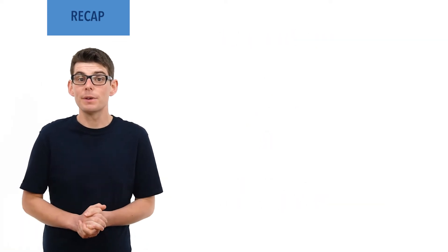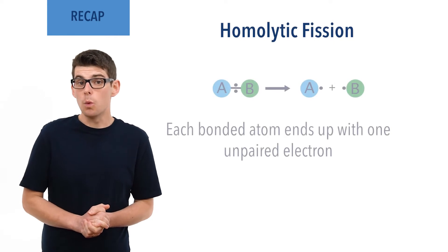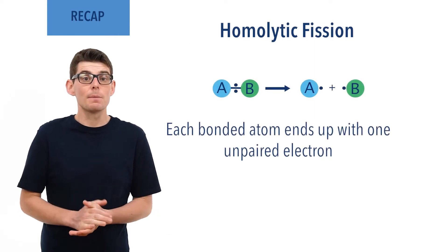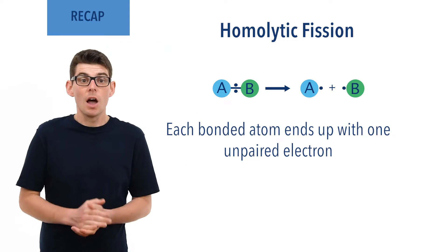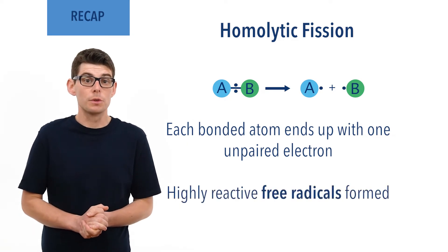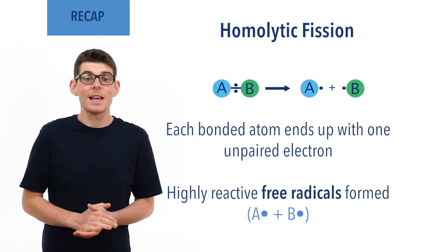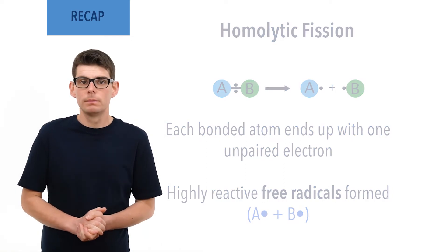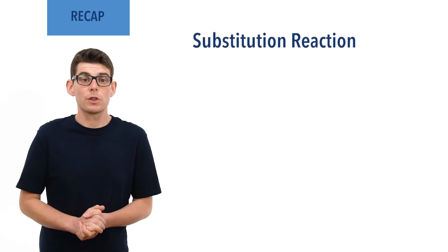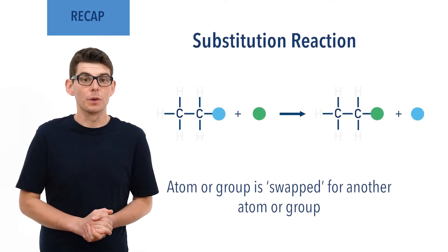Homolytic and heterolytic fission describe the breaking of a covalent bond between two atoms. In homolytic fission, each bonded atom takes one of the bonding electrons, ending up with an unpaired electron. Highly reactive species called free radicals are produced and can be recognised by the use of a large dot representing an unpaired electron. A substitution reaction is where one group or atom in a molecule is swapped for another group.